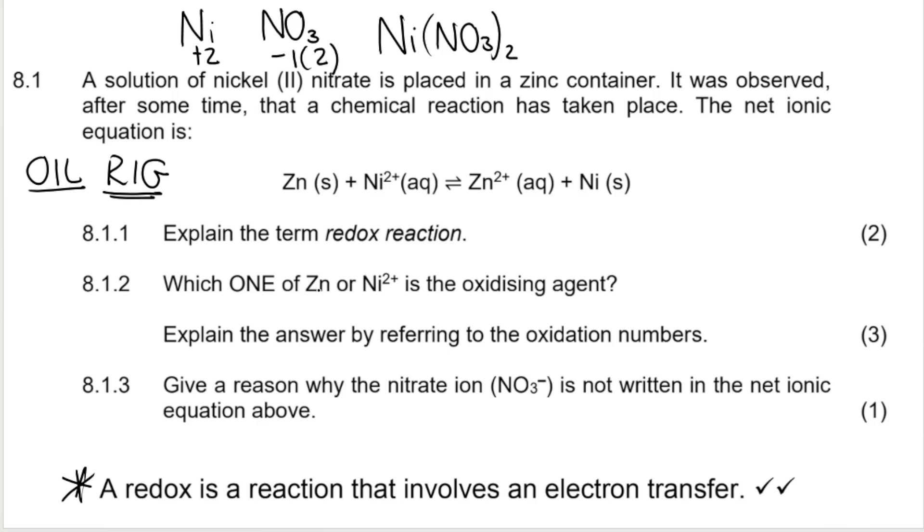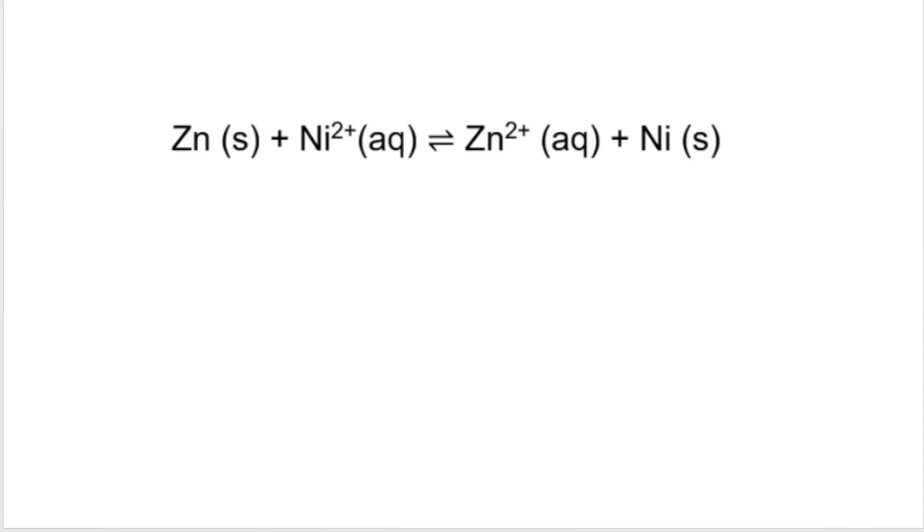Which one of Zn or Ni²⁺ is the oxidizing agent? Explain the answer by referring to oxidation numbers. So I was going to say that there's a few ways for us to figure this out, but the easiest is to use oxidation numbers, and they want us to use oxidation numbers. So let's do that. As you should be able to recall from my previous videos, when we assign oxidation numbers and our element is standing all by itself, even if it's diatomic, it has an oxidation number of zero. So Zn would be zero, and Ni, nickel, would be zero.